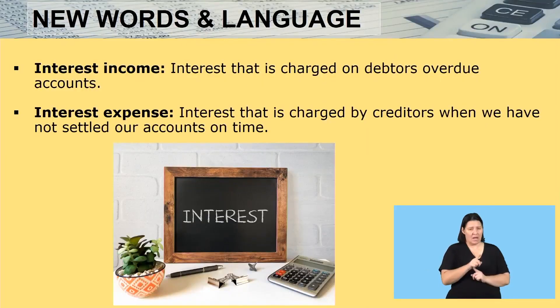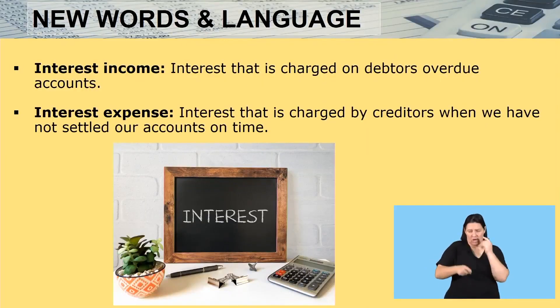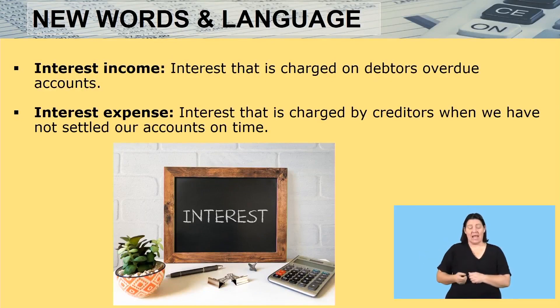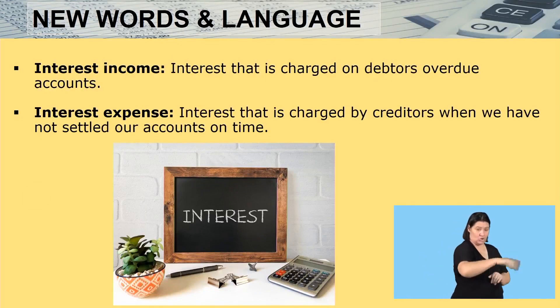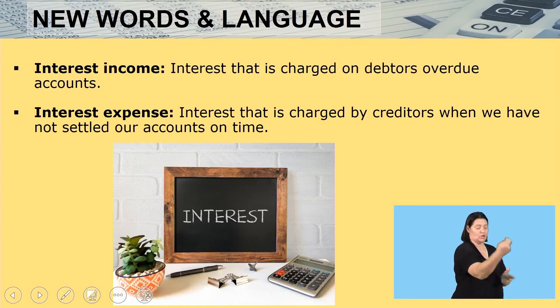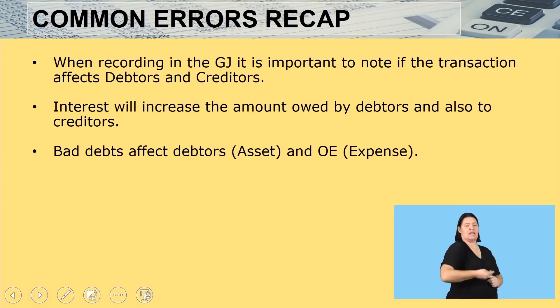In today's class, we were able to introduce these new words: interest income and interest expense. Interest income is interest that is charged on overdue debtors' accounts. Interest expense is interest that is charged by creditors when we have not settled our accounts on time.